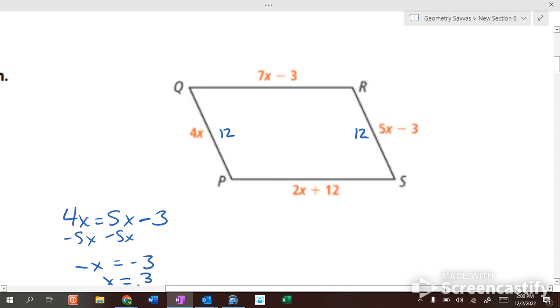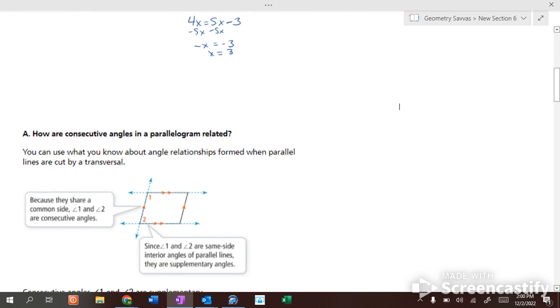Put in 3 here. 2 times 3 is 6 plus 12 is 18. 7 times 3 is 21 minus 3 is 18. Look at that. Opposites are congruent, aren't they?